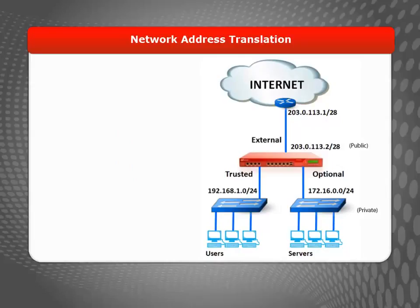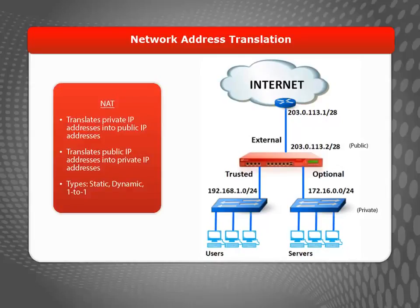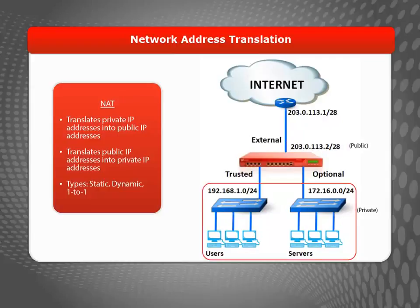Before you create any policies, you need to have a basic understanding of NAT, or Network Address Translation. NAT is a feature that lets you stretch the number of computers able to work off of a publicly routable IP address and hide the private IP addresses of hosts on your LAN. There are three types of NAT: static, dynamic, and one-to-one.